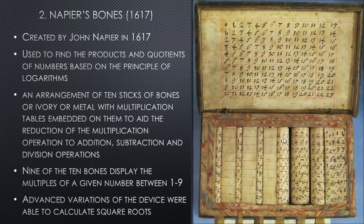The second device is Napier's Bones, created by John Napier in 1617. Napier's Bones was used to find the products and quotients of numbers — products being the outcome of multiplying numbers, and quotients the outcome of dividing numbers. It did this based on a principle of logarithms. Incidentally, John Napier was also the inventor of logarithms, so he used his invention to augment his other invention.